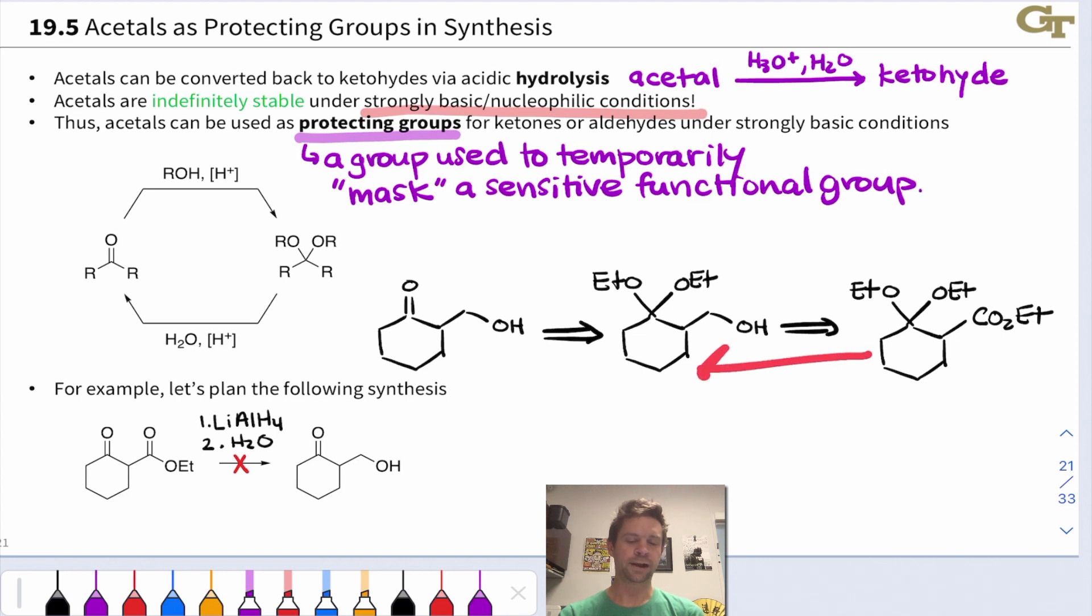Now we can think about working this backwards using a reduction transform back to the ester. Since we know in the forward direction this reduction would work, we treat with lithium aluminum hydride and the ester would be reduced. But this acetal group is indefinitely stable under strongly basic conditions associated with lithium aluminum hydride, so it will go through that reduction process completely untouched. The first step of the synthesis is going to be formation of the diethyl acetal from the starting beta-keto ester.